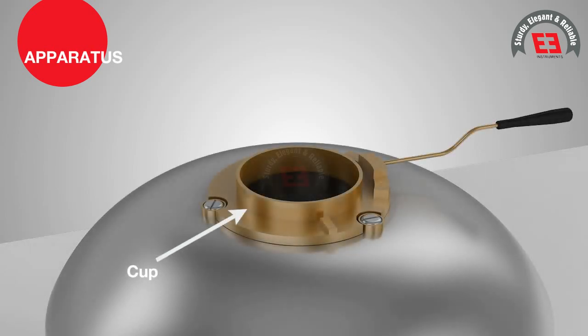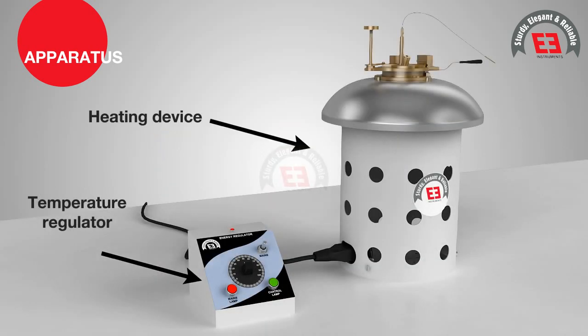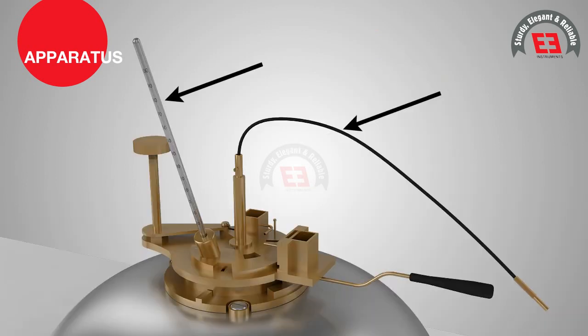The Penske Martin's Close Cup Tester consists of a cup, flame exposure device, heating device with temperature regulator, stirring device, and suitable thermometer.